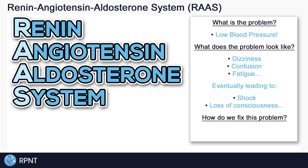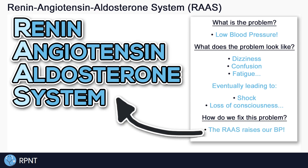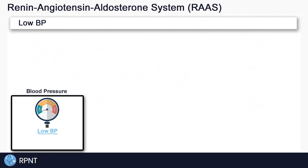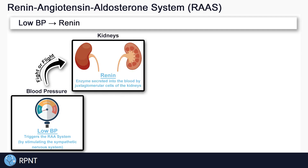When we're experiencing low blood pressure, how is it that our body fixes the problem? That's why we have the renin-angiotensin-aldosterone system, which helps to bring our blood pressure back up to normal. In the event of low blood pressure, our body stimulates the sympathetic nervous system, also known as our fight-or-flight nervous system, which stimulates the release of an enzyme called renin. Renin is secreted into the blood by the juxtaglomerular cells of the kidneys, and it's really what gets the system rolling. Enzymes like renin act as a mediator that help push chemical reactions along, usually by breaking things down into smaller pieces.